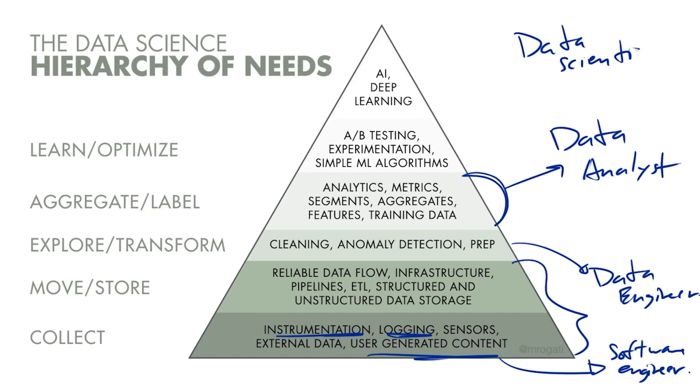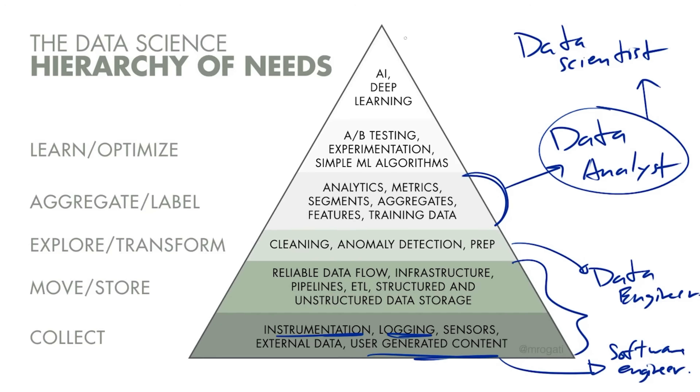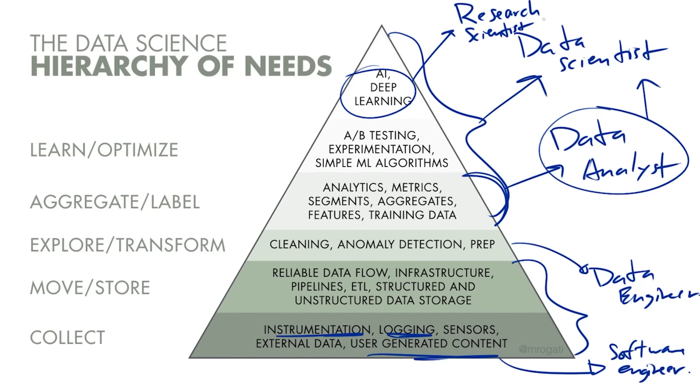In my experience, many companies call data analysts data scientists nowadays. In general, data scientists are paid more because they usually require a more technical background. However, I've seen many companies use their data scientists to do data analyst work because it is that vital for the company — so they get their smartest data people to work on that. Data scientists can also work on anything above this, building ML algorithms up to AI and deep learning models. Though most of the time nowadays they're called research scientists and they're supported by ML engineers to build out the system they need.